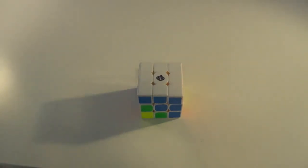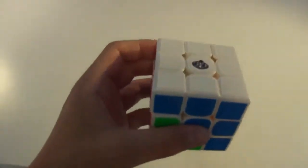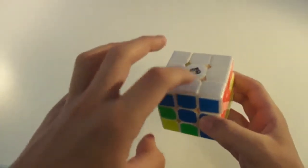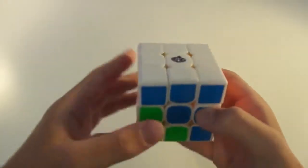So in the last two episodes, we covered how to solve the first layer by first solving the edges, then the corners.